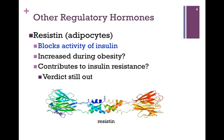Next we have the hormone resistin. It blocks the activity of insulin, as if the body uses this hormone to regulate its response to insulin. A good question is whether or not resistin increases in the development of obesity and contributes to insulin resistance in diabetes — though this is still uncertain. You can see the ribbon diagram of resistin at the lower portion of the screen.